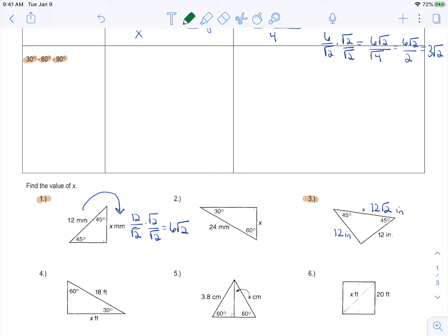So because you have a smaller angle, 30 is the smallest, that means your legs will not be equal. So one will be short, and one will be long.